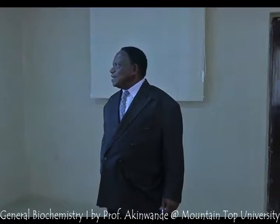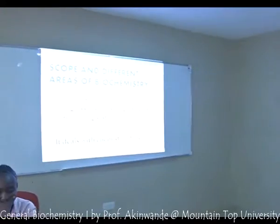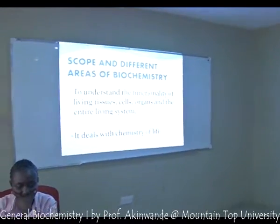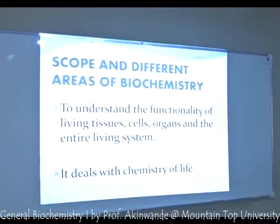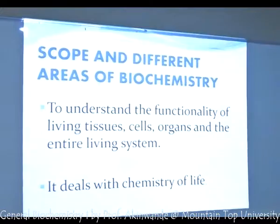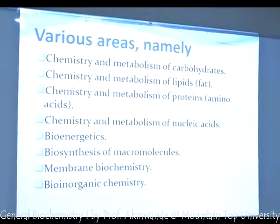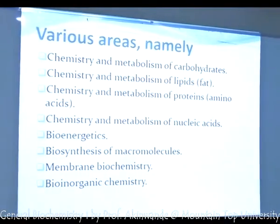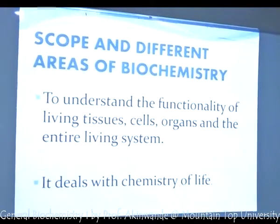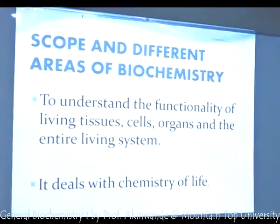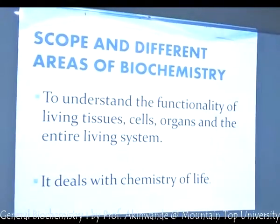Now let's look at the different areas of biochemistry — the scope and different areas. As I have told you, we use the cell as an example to understand the functionality of living tissue, cells, organs, and entire living systems. The basic thing is the cell. From the cell, you go to tissue; from tissue, you go to organs; from organs, you go to your entire body system. You have to look at the whole thing — all these things with the chemistry of life.